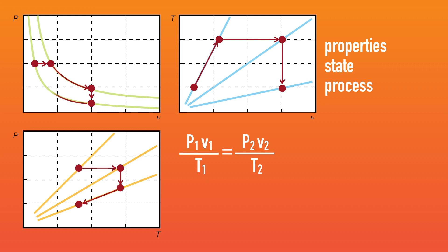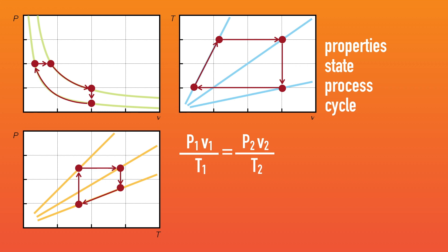This cooling process is depicted on the pressure–temperature chart on a constant specific volume line, and on the temperature–specific volume chart as a vertical drop. Finally, we compress our gas isothermally to increase the pressure and arrive where we started. These four processes constitute a thermodynamic cycle. Cycles are important when studying power generation devices such as your car engine. Keep in mind that processes do not have to follow a constant property process — they can change all three properties at the same time. These are called polytropic processes.